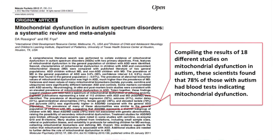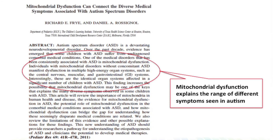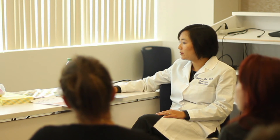The tests looked specifically at the activity of the mitochondrial respiratory chain complexes shown in the video. Here are several other research publications from the past 10 years, all showing evidence for mitochondrial dysfunction in autism. One review article analyzed 18 different studies and found that 78% of those with autism had blood tests indicating mitochondrial dysfunction. An excellent review paper published in 2012 explains how mitochondrial dysfunction can connect many of the different medical symptoms associated with autism, including symptoms in the brain, muscle, gastrointestinal system, and endocrine system. Packets with the abstracts of these studies are available for reference.